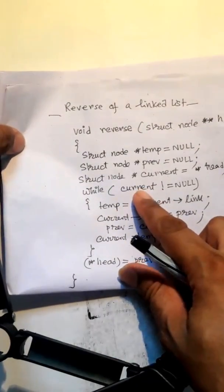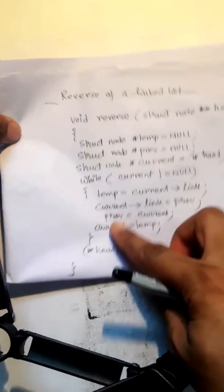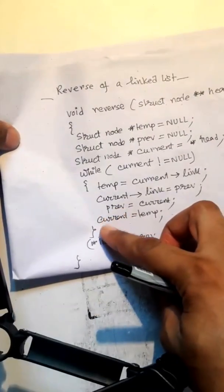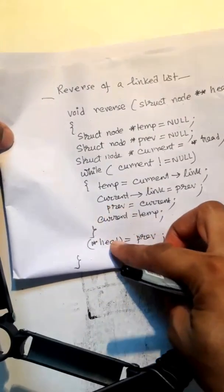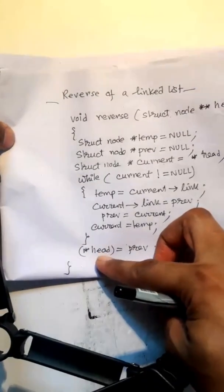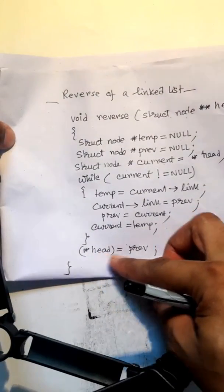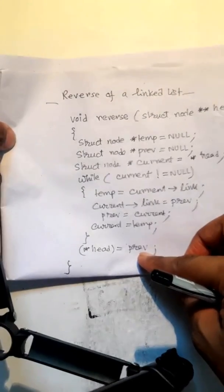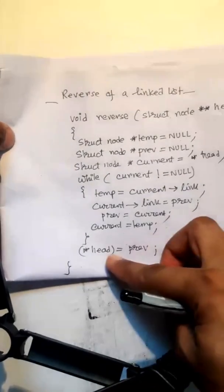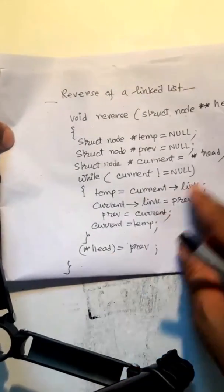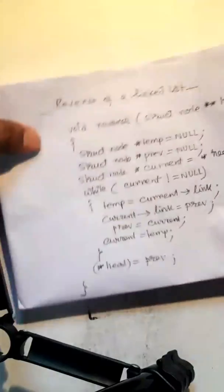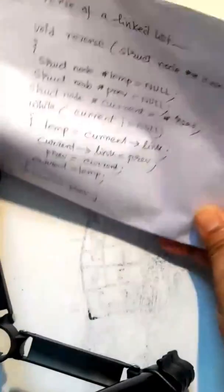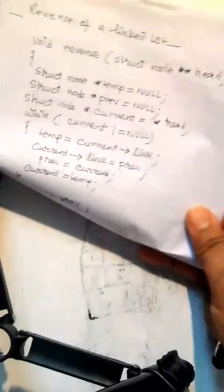Finally, when current becomes null, it exits the while loop, and head is assigned the value of previous. So this is the reverse of a linked list. This is an important function for examination.